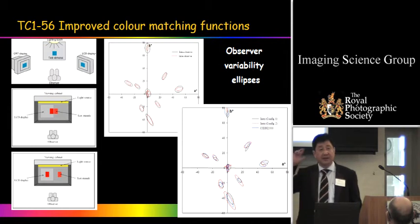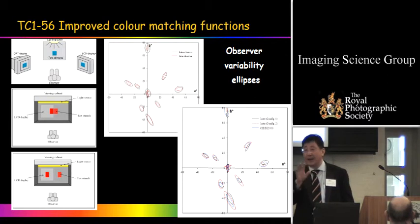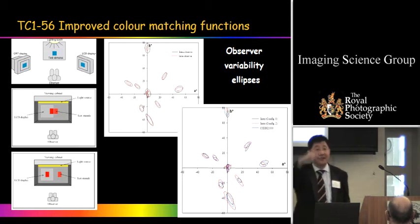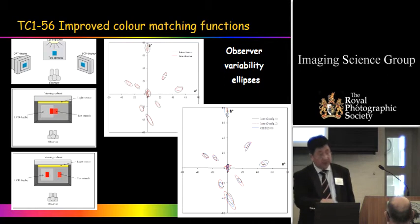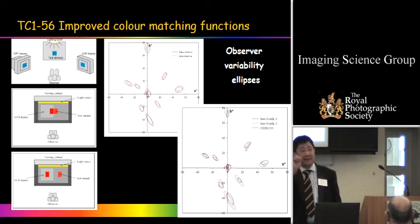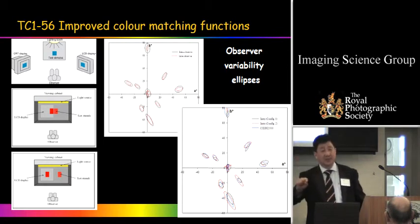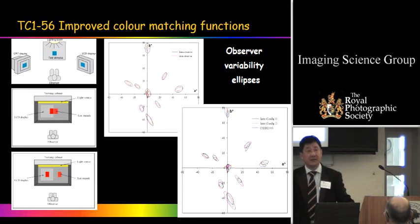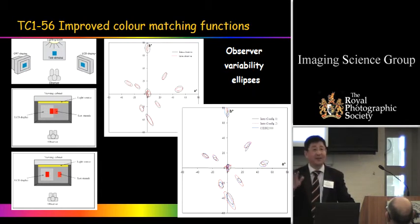Yongji — the lady who gave the talk this morning — is working on observer metamerism: how observers vary in matching a color. This is a revisit of the basic color matching function. CIE currently has standard observer functions, and we're trying to understand the typical variation between observers. Yongji's work looks at the variability, working closely with RIT, examining different techniques and different people to characterize variability between observers. The particular interest is matching patches on screen, which has many applications in the surface color industry.